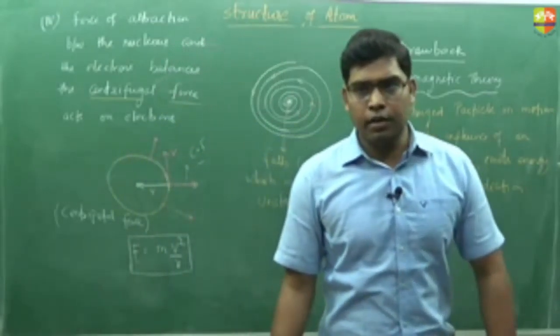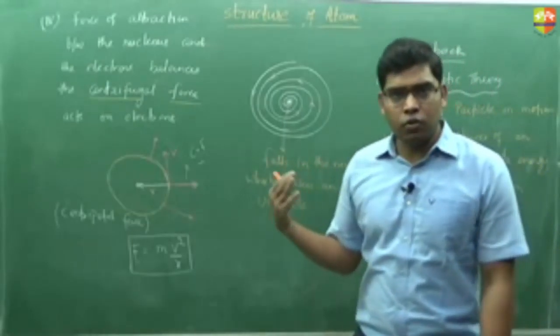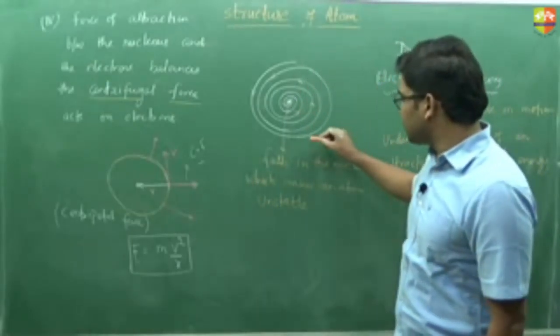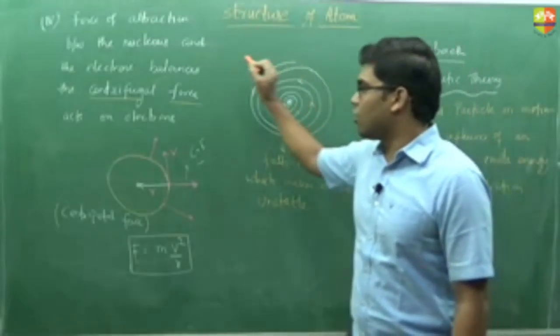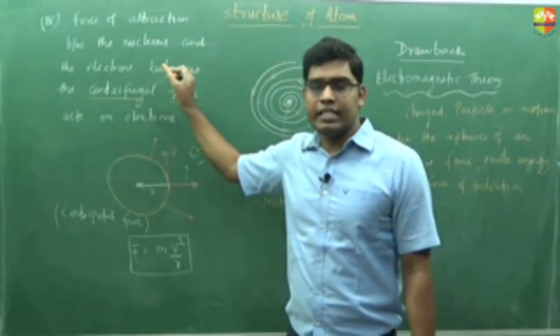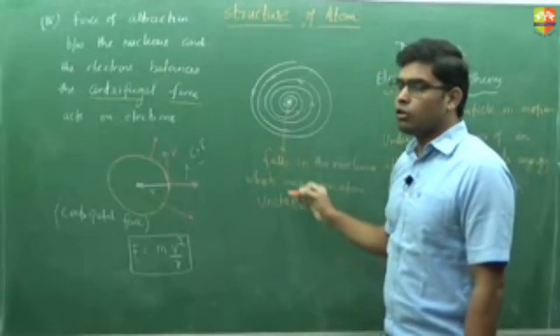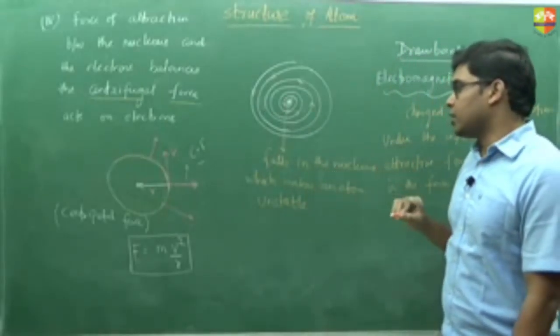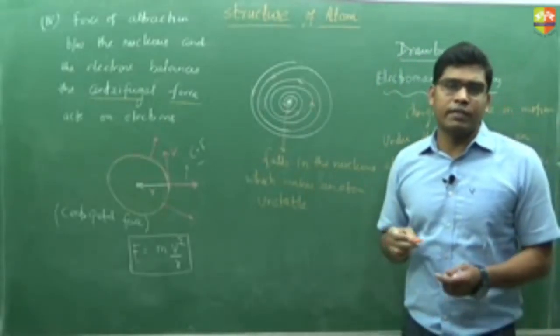Hence, but the atom is quite stable, that we know already. So hence, the postulates of Rutherford model does not stand true with the electromagnetic theory. This is the problem, a drawback with this model we have, and hence we have discarded this particular model.